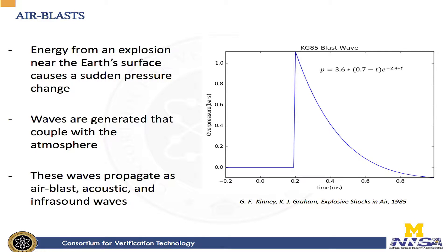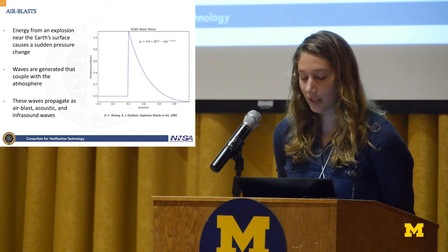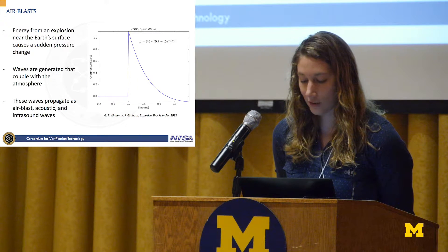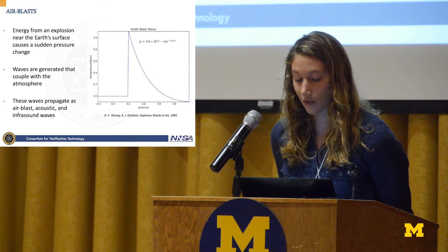First, a little bit of background on air blast. When an explosion occurs above Earth's surface, a sudden pressure change occurs. This generates a wave that couples with the atmosphere, which then propagates as air blast acoustic and infrasound waves. The image to the right is a traditional air blast model. Note the sharp discontinuity at the onset and then the decay following the peak overpressure.